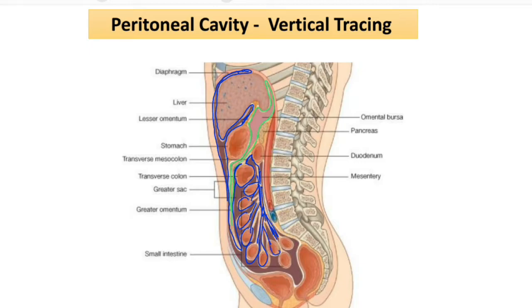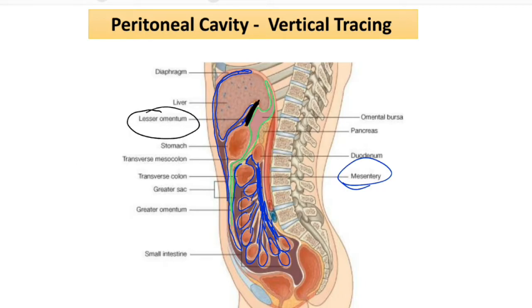The peritoneum going downwards will enclose the coils of the small intestine. The small intestine is suspended by this fold of the peritoneum — we call it the mesentery. The portion between the liver and the stomach is known as the lesser omentum, and the portion going below or downwards is known as the greater omentum.